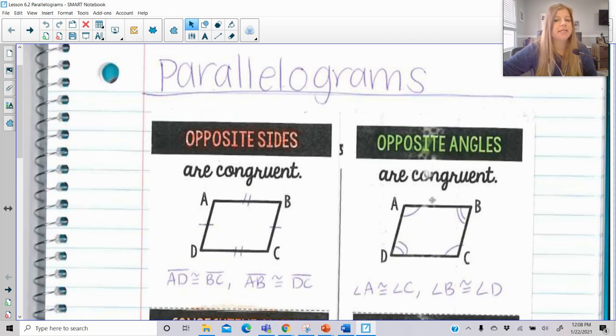We also need to know that opposite angles are congruent. Angle A is congruent to angle C. Angle B is congruent to angle D.